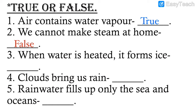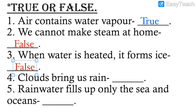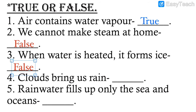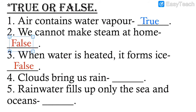Number three: When water is heated it forms ice — this is false. When you heat water, water vapor or steam comes out of it. So when water is heated it does not form ice; water vapor is formed, not ice.